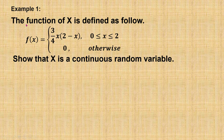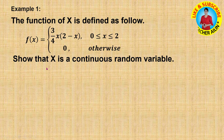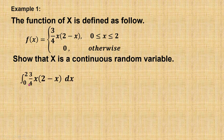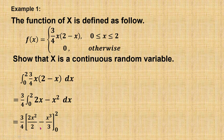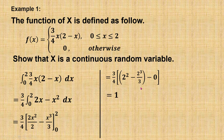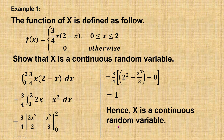Let's try a question: the function f(x) is defined as follows — show that x is a continuous random variable. If x is a continuous random variable, then the total area under the curve should equal 1. To find the area under the curve, we carry out the integration of the function from 0 to 2. Taking out the constant and expanding the brackets, then integrating and substituting x = 2 minus x = 0, I found that it equals 1. This shows that x is a continuous random variable.